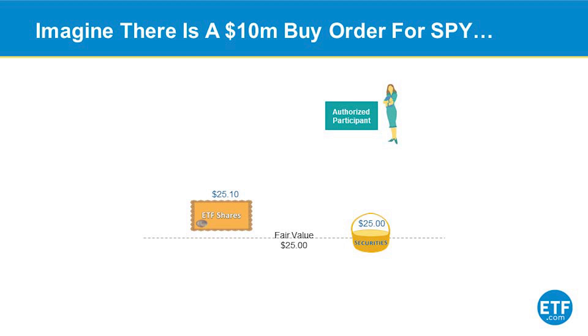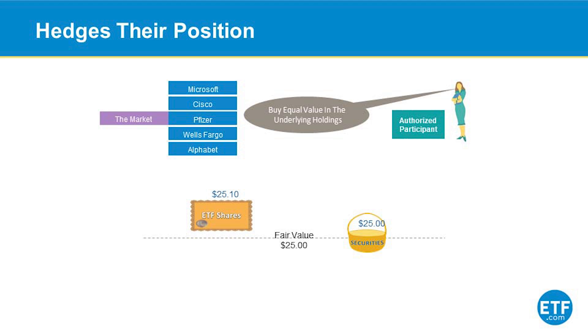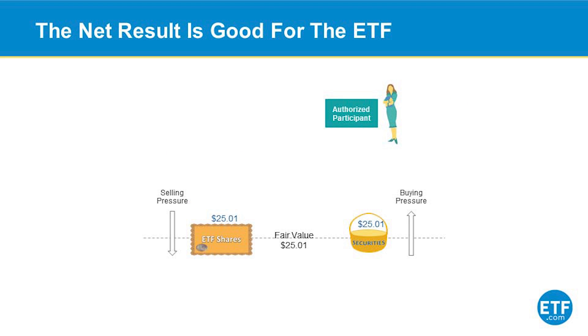But imagine there's so much demand for this ETF that it trades to a premium. It starts trading up and up, and all of a sudden people are willing to pay $25.10 for that basket, which is really only worth $25. Well, the authorized participant is going to notice that, and they make a simple transaction. They sell at that inflated $25.10 price — they sell the ETF. And simultaneously, they go out and buy all the things on the shopping list. The net result is actually quite good for the ETF, because the authorized participant is now a seller of the ETF, pushing its price down.